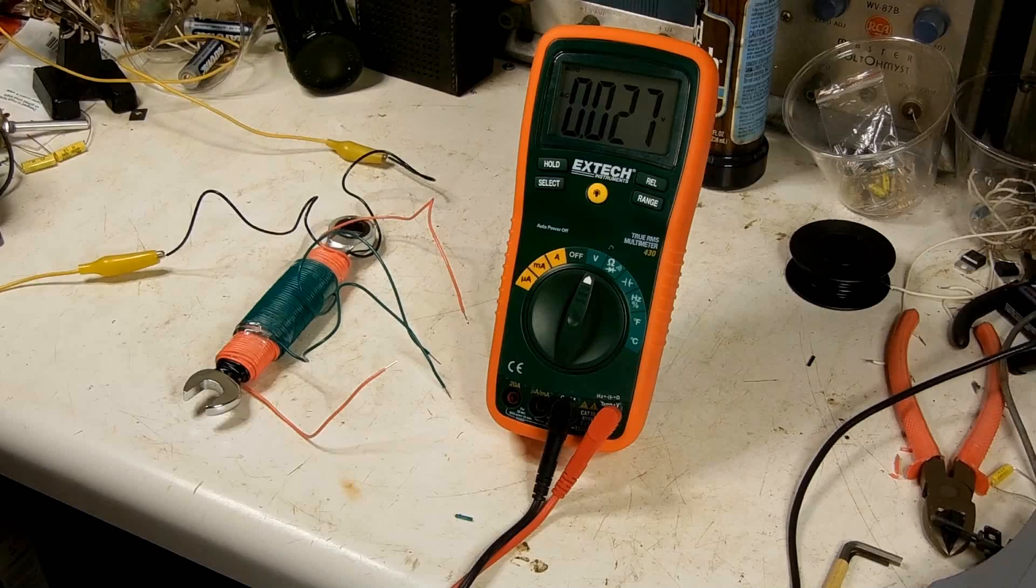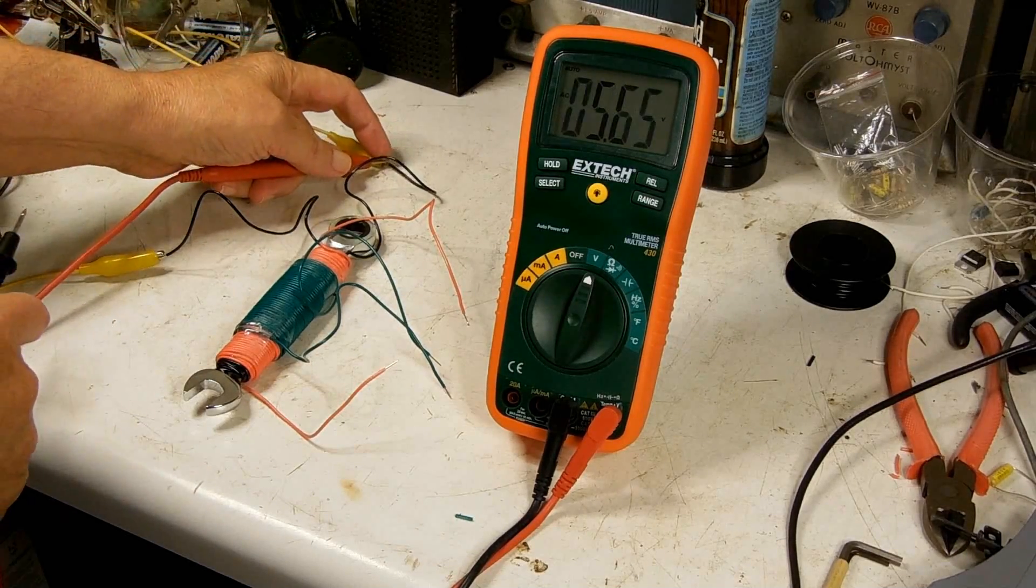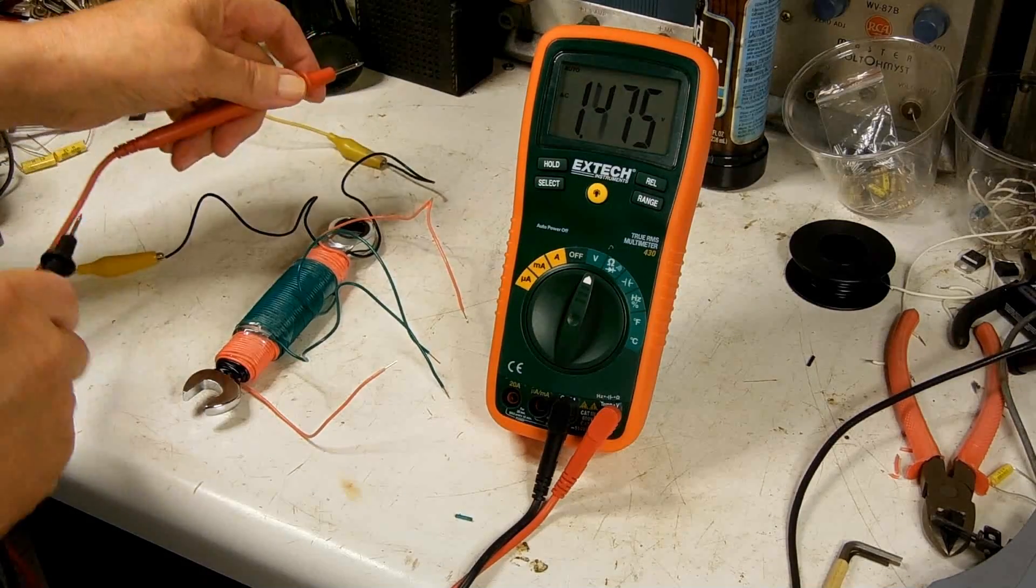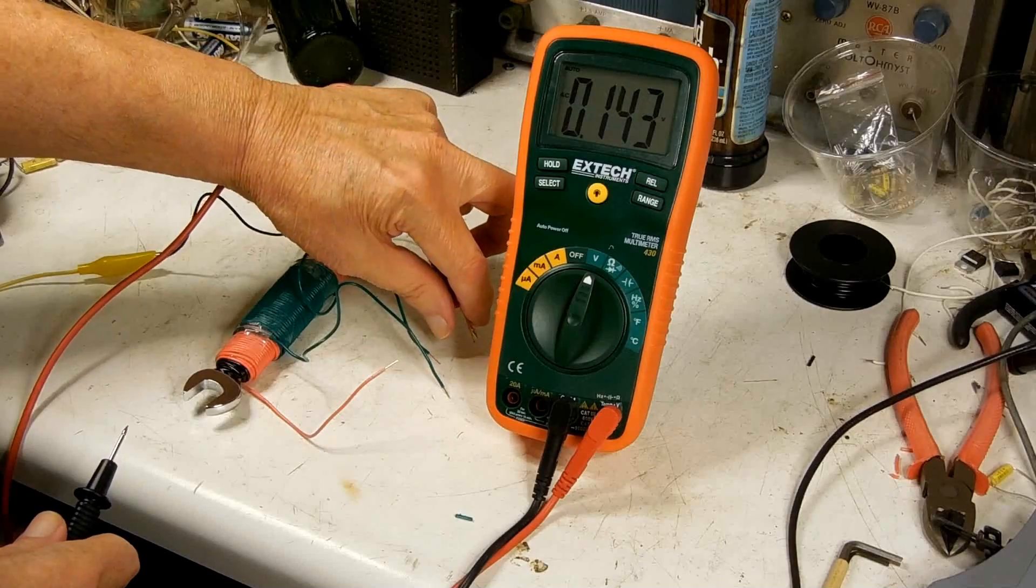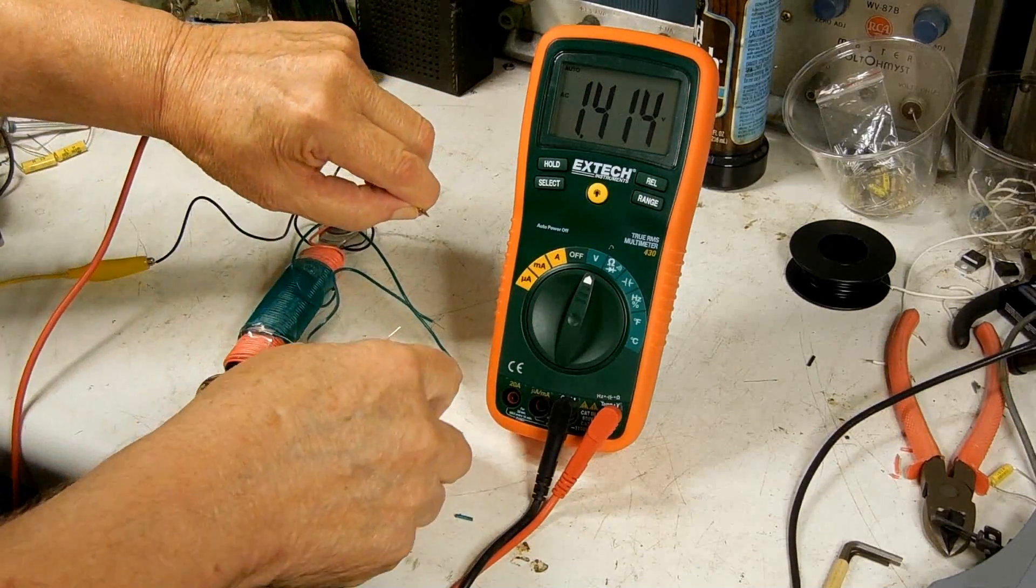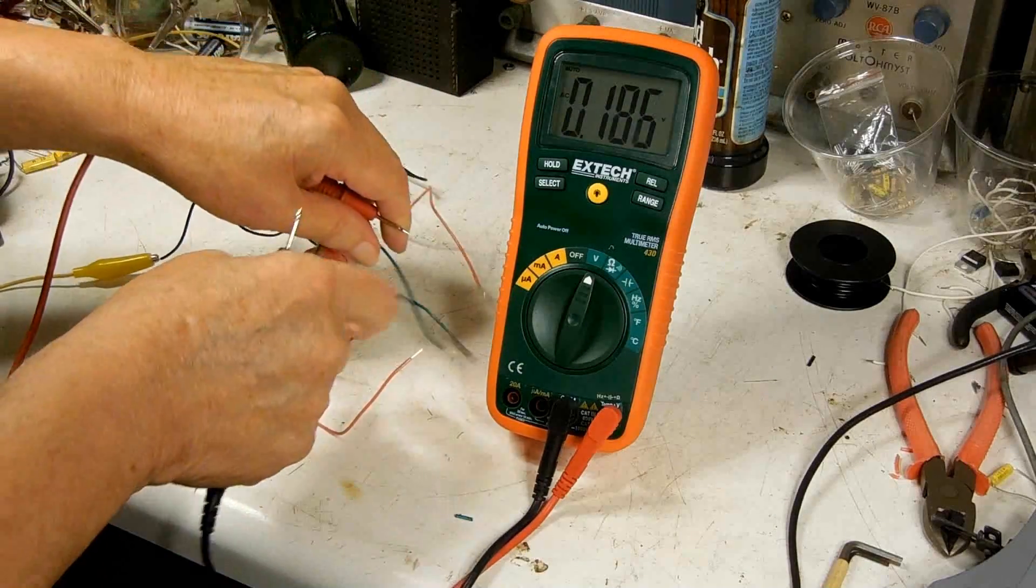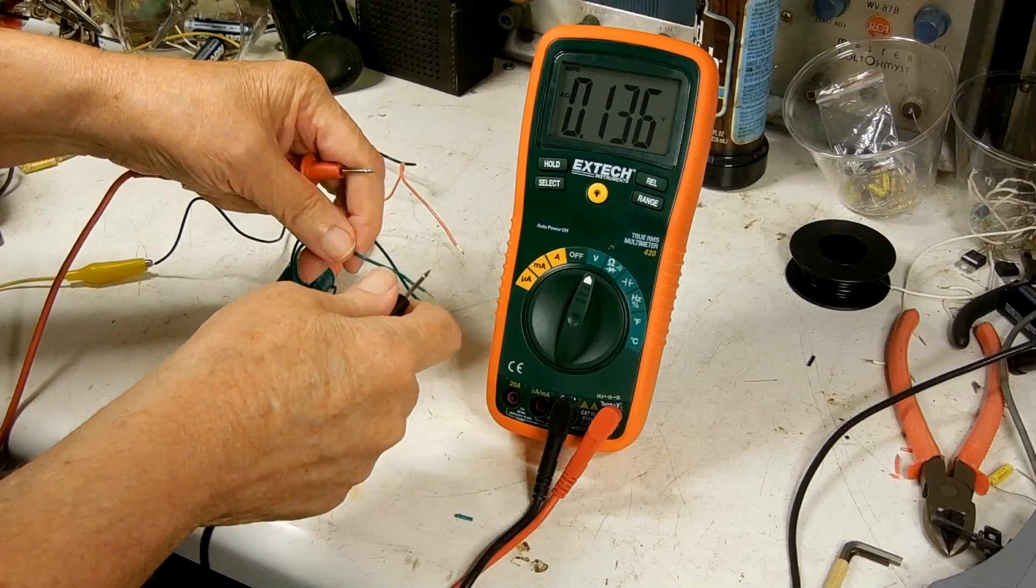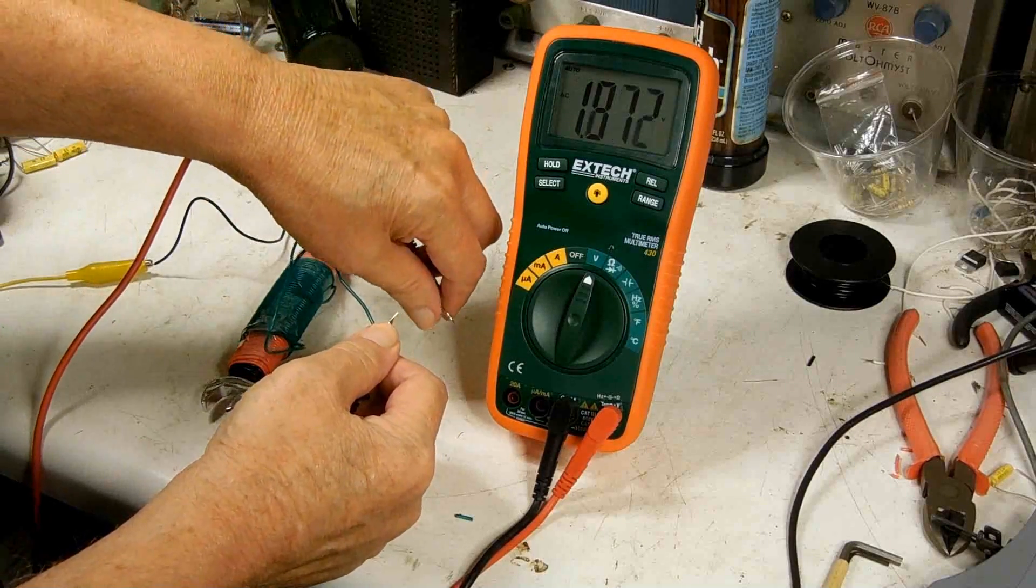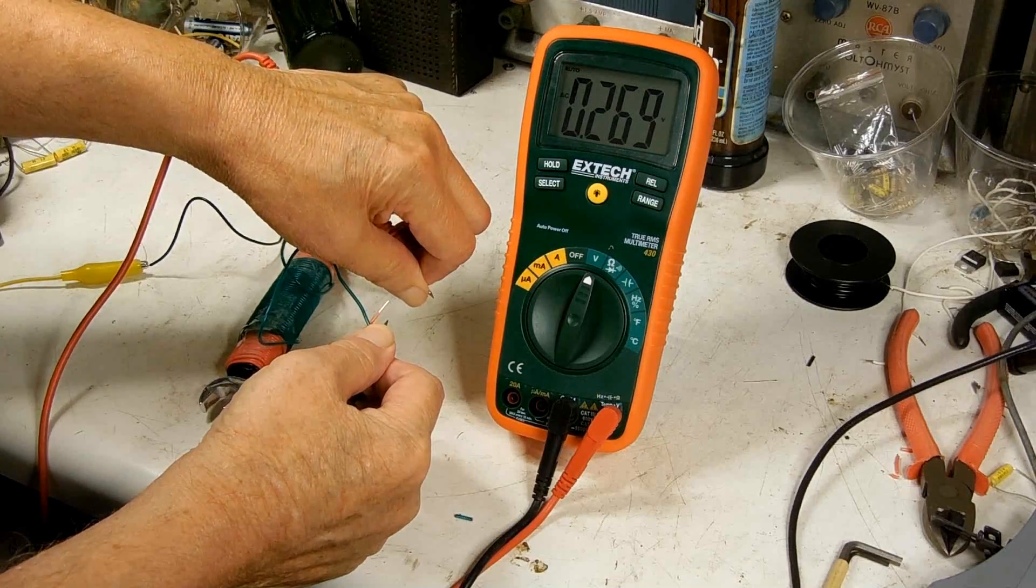Okay, let's read some voltages on this transformer. Across the primary we have about 1.3 volts. The secondary that has the most wire reads about 1.1 volts. And then the secondary with the least wire reads about 0.26 volts.